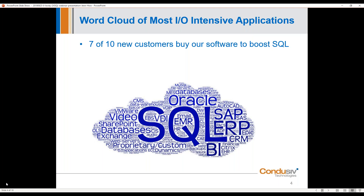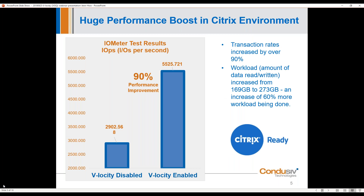As another use case beyond SQL: our software really applies to anything running in Windows. We ran some Iometer benchmarks on a Windows 10 system running Citrix Zen Desktop. Transaction rates increased by 90% with Velocity on, and the amount of work done in the same time period went up by 60%. This is just what our software does in the context of Windows.